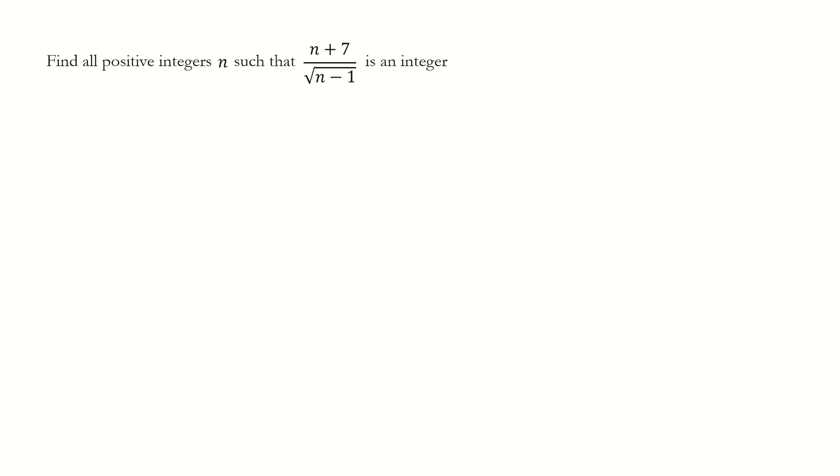Since we are told this expression is an integer, we define it equals to a, where a is a positive integer. Then we switch the position for a and the square root term. Because the left-hand side is rational, the right-hand side must be rational.